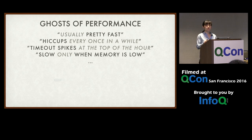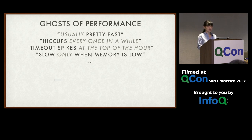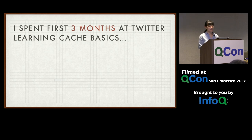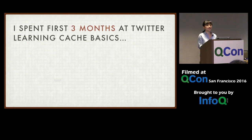Looking back on my tenure at Twitter, learning about cache was not that hard — you read the memcached code, the Redis code, learn about Ketama hashing or other consistent hashing schemes, and you can claim to be some kind of cache expert. But what I didn't expect was spending multiple years chasing these ghosts. If you have three cache servers, you run into a problem maybe once a year and shrug it off. But as we scaled with more instances and more customers, you get haunted more often.